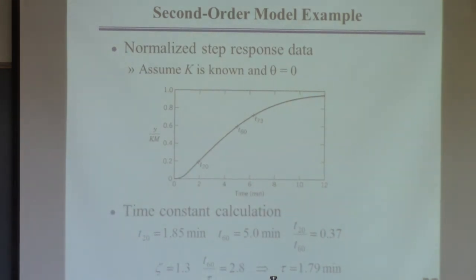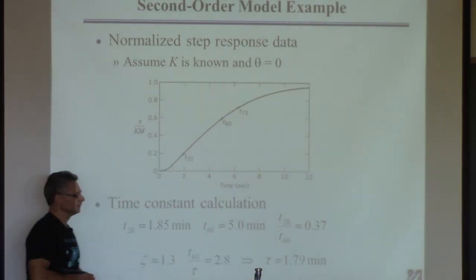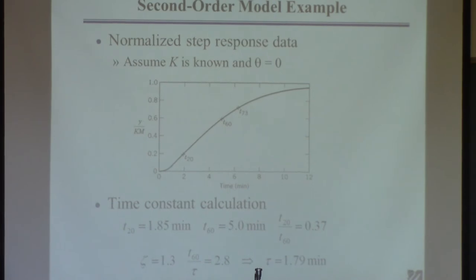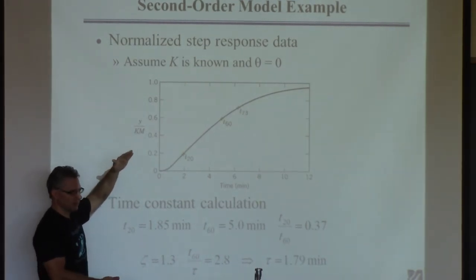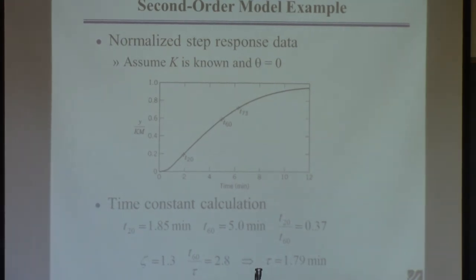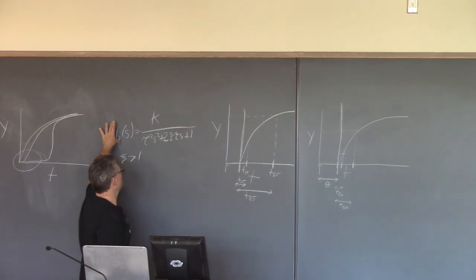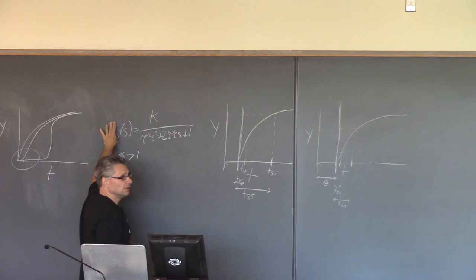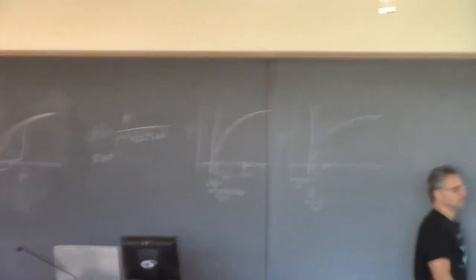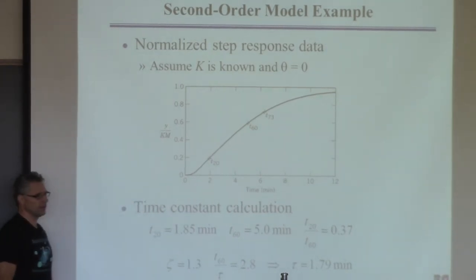From the graph, reading the logarithmic scale, we find zeta is approximately 1.3—which checks out since it's greater than 1. Tau is approximately 1.8. You would also find K in the normal way: from how much you changed the input and how much the output changed. Then the next step is to take your model with the found K, tau, and zeta values, simulate it in Simulink with the same step change used to collect the data, generate the output, and plot it against the actual data to verify.